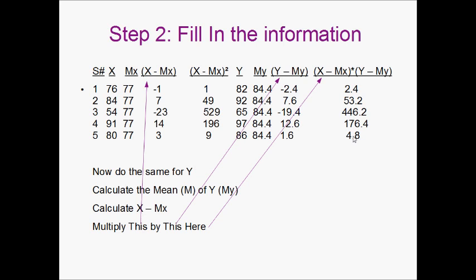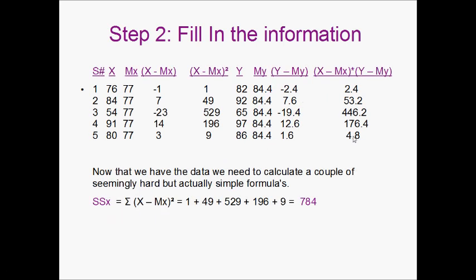So now that we have all this information, we need to calculate a couple formulas. The first formula we need to calculate is called the sum of squares, which is abbreviated as SSx. And the formula for this is going to be the sum of X minus mean of X squared. So we're going to add up each of these numbers here. 1 plus 49 plus 529 plus 196 plus 9 is 784. That's our sum of squares.